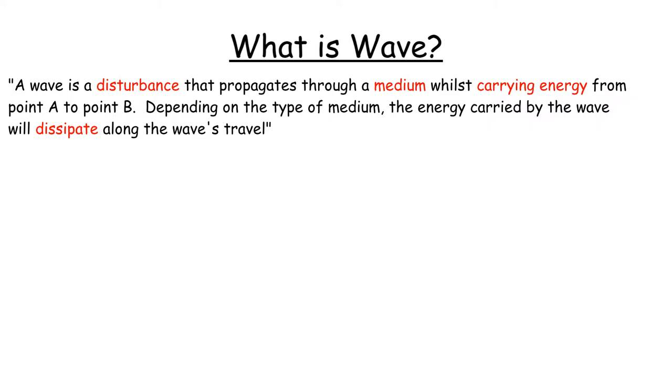So if we write a definition of what a wave is, it would say that a wave is a disturbance that propagates through a medium, carrying energy from point A to point B.